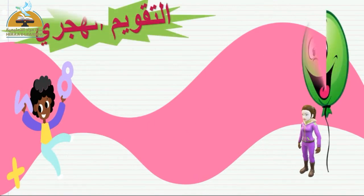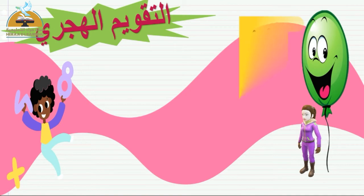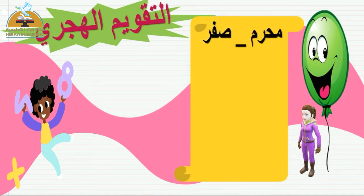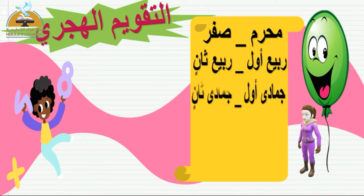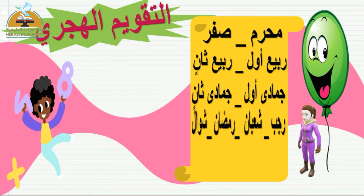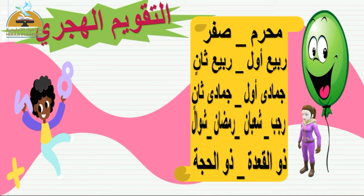عندنا التقويم الهجري. هو عبارة عن اثنا عشر شهرًا: محرم، صفر، ربيع أول، ربيع ثاني، جمادى أول، جمادى ثاني، رجب، شعبان، رمضان، شوال، ذو القعدة، ذو الحجة. إحنا في شهر رجب، نضع دائرة عليه.